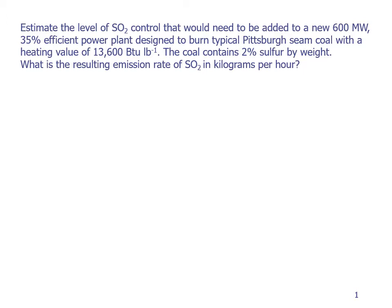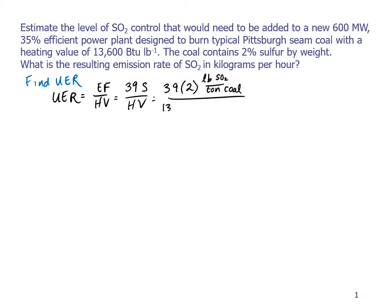The first step in order to figure out the amount of control needed is to find the uncontrolled emission rate, or the UER. Recall that the UER is equal to the emission factor divided by the heating value. For SO2, we know that the emission factor is equal to 39 times S divided by the heating value, where S is the percent of sulfur in the coal by weight. This gives us a number in units of pounds of SO2 per ton of coal. And the denominator is 13,600 BTU per pound.